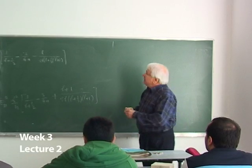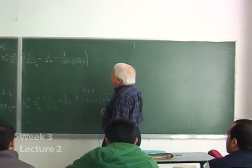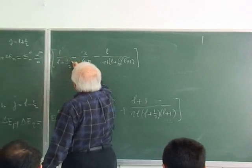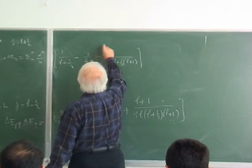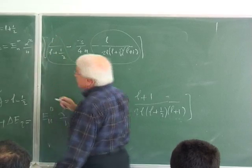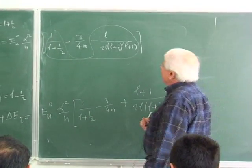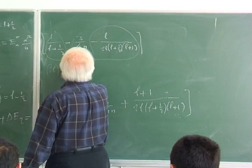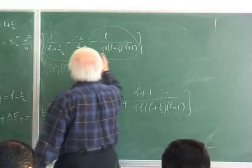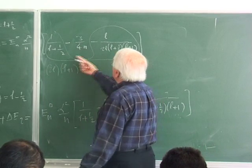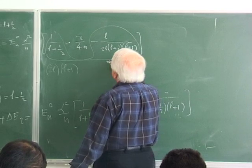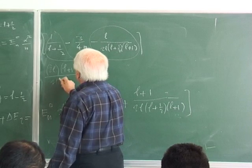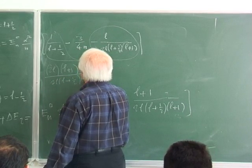Let me finish these computations first. Obviously, we have to combine these two — they are all L-related. Therefore, what I have is twice L times L plus 1. These are common. Therefore, I have multiplied with that minus L divided by twice L times L plus 1 times half L plus 1.